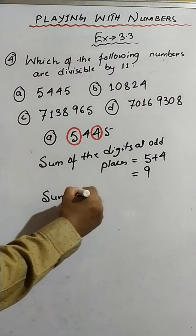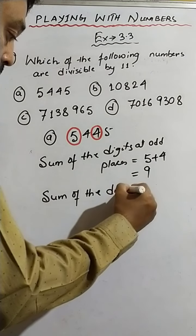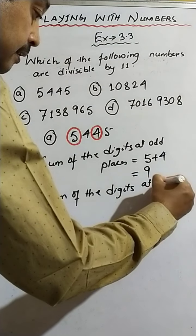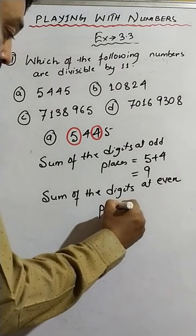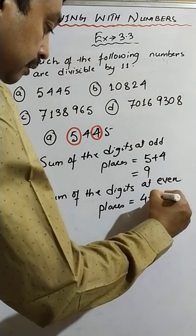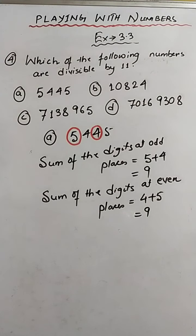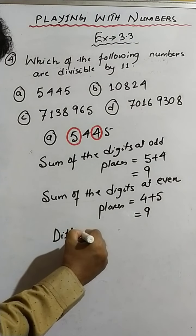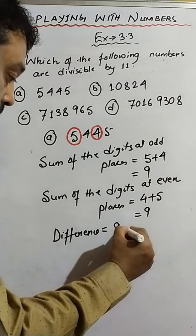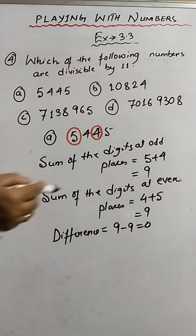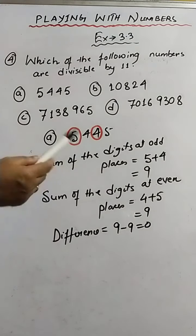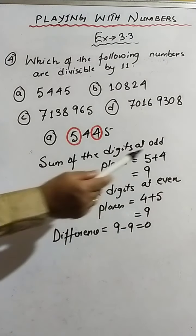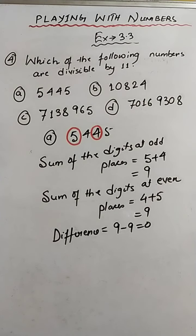Now the sum of the digits at even places — that would be 4 and 5, that is 4 plus 5, which is again 9. Now we have to find the difference between the two: 9 minus 9, that would be 0. Since the difference is 0, hence 5445 is divisible by 11.